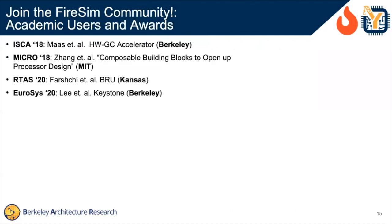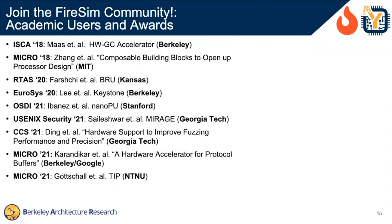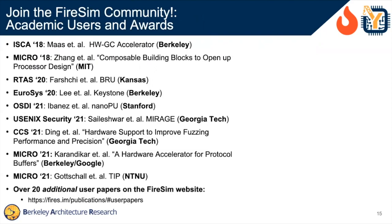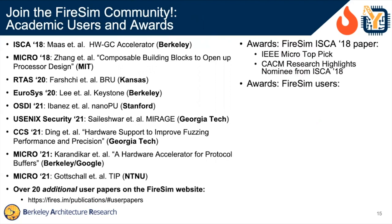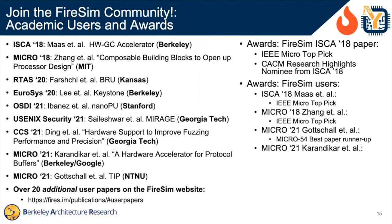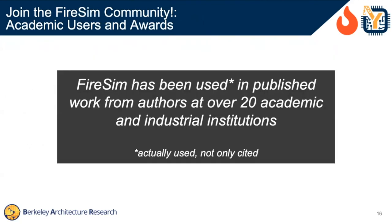There are also a bunch of academic users across a bunch of conferences. This is just a sample — there are over 20 additional papers listed on the FireSim website. These are all papers that use FireSim, not papers about FireSim or its internals. A bunch of these papers have also won awards at various conferences. FireSim has been used in published work from authors at over 20 different institutions, both academic and industrial — and this is actually published work actually using FireSim in the project, not just citing the paper.